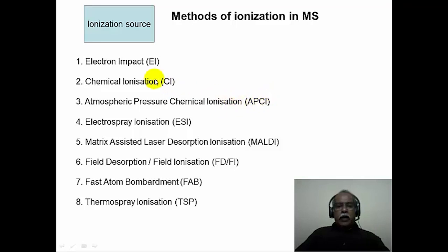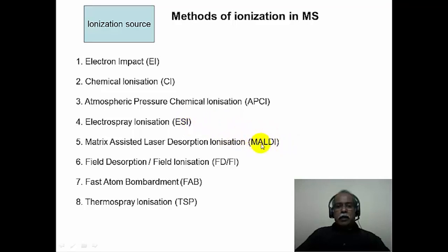Chemical ionization can be performed under vacuum or at atmospheric pressure; when done at atmospheric pressure it is called APCI, or atmospheric pressure chemical ionization. Electrospray ionization (ESI) and matrix-assisted laser desorption ionization (MALDI) are newer techniques that are very recently discovered and extremely important in modern mass spectrometry — we will deal with these in detail in a later module. Other less commonly used techniques include field desorption or field ionization, fast atom bombardment (where xenon atoms are bombarded onto the substrate), and thermospray ionization, which is related to electrospray ionization.